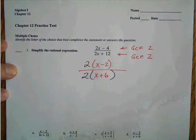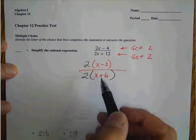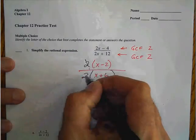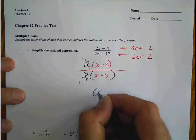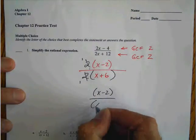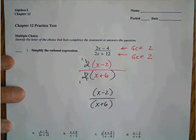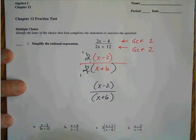When we have items that are multiplied together, we're allowed to cancel factors. So the two factors cancel to 1s, that leaves us an answer of x minus 2 over x plus 6. As we look at the bottom, this is option D.